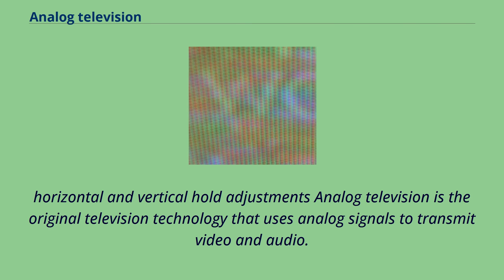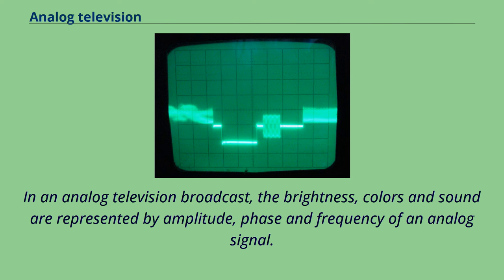Analog television is the original television technology that uses analog signals to transmit video and audio. In an analog television broadcast, the brightness, colors, and sound are represented by amplitude, phase, and frequency of an analog signal.